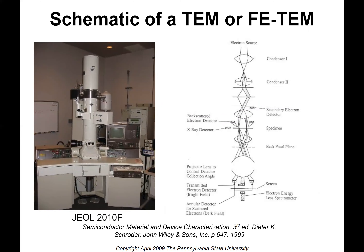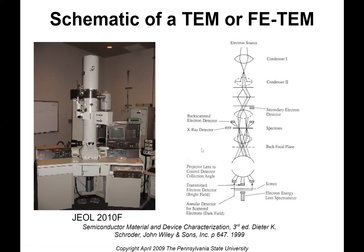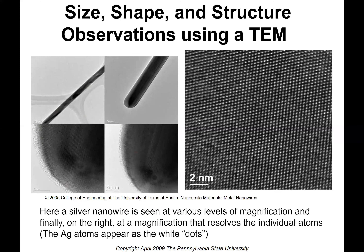Here's a schematic of a TEM or FETM. It uses magnetic fields to condense the electron beams. Size, shape, and structure can be obtained using a TEM. This shows higher and higher magnification — the final magnification on the right shows two nanometers at this scale. So obviously the silver atoms are much smaller than two nanometers, but they're at a level where you can see the individual atoms.